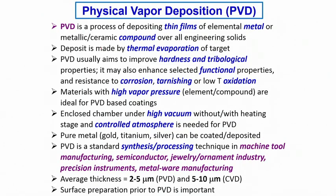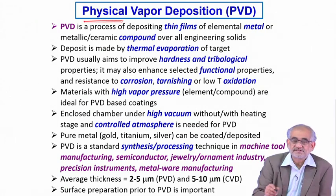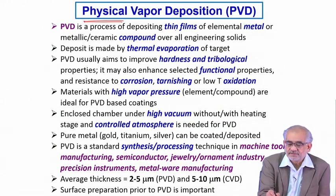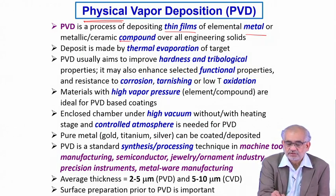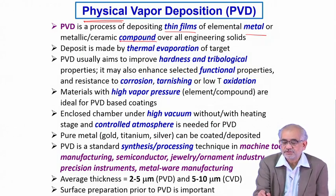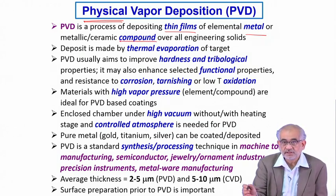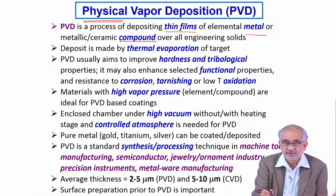As the name suggests, physical vapour deposition requires only a change of physical state. You can deposit a thin film of elemental metal or compound on any kind of engineering solid, for a small area or a larger area.